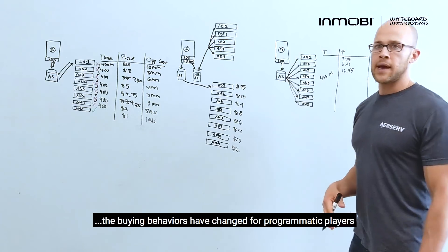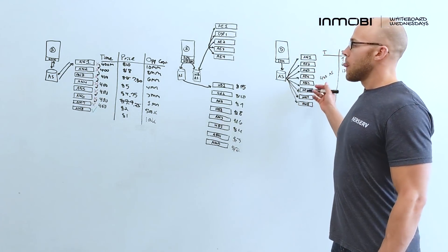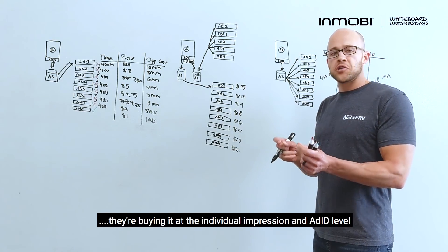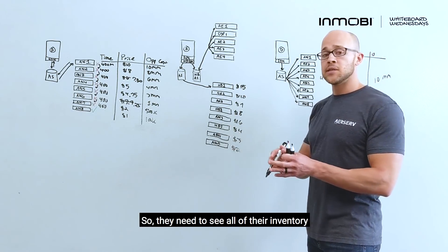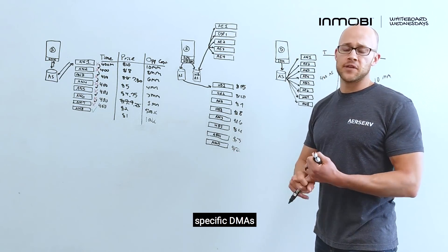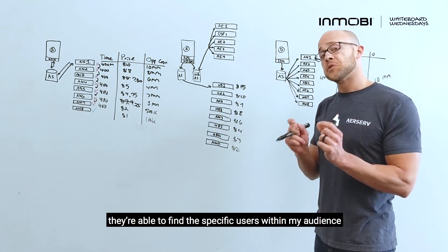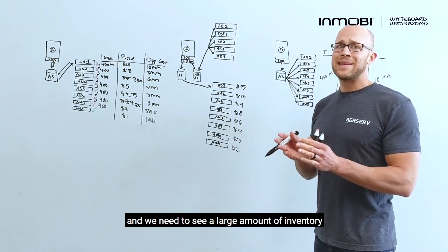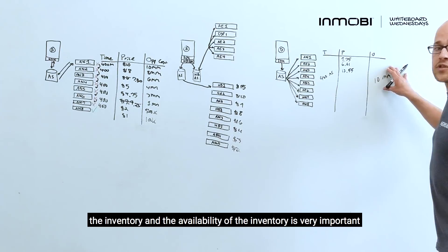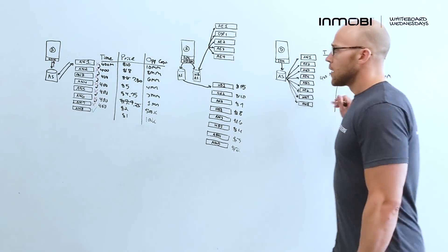The reason that it's important is that the buying behaviors have changed for programmatic players. So, instead of buying on an app level or a site level, they're buying at the individual impression and ADID level. And so, they need to see all of the inventory. If they have campaigns that are geared towards specific demographics, specific DMAs, gender, whatever it may be, they're able to find those specific users within my audience. And they need to see a large amount of inventory to be able to target those users. So, the inventory and availability of the inventory is very important.